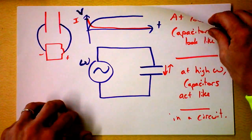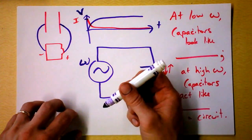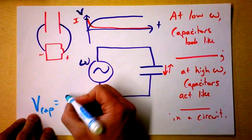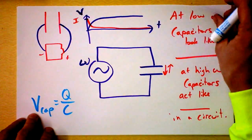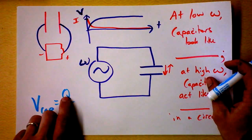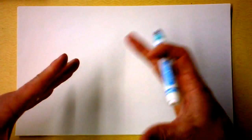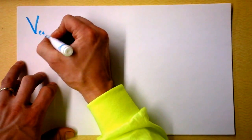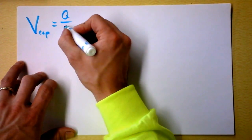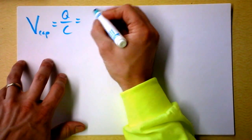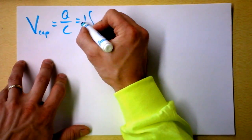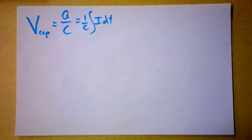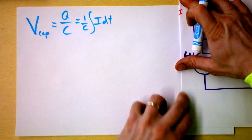Now we're going to do a little bit of calculus. You know that the voltage across a capacitor is the charge on the capacitor divided by its capacitance. This charge is actually the integral of the current going into the capacitor — as current goes into a capacitor, it fills up the capacitor and gives it charge on its positive plate. The voltage on the capacitor is charge divided by capacitance, so it's 1 over C times the integral of current over time. With my AC generator, I have a current that depends on time.